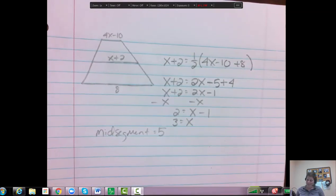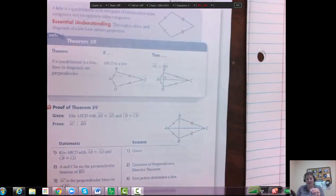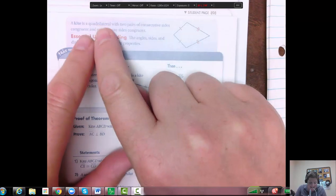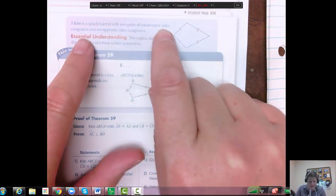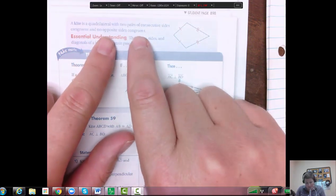The next theorem and last one is, what is a kite? Last shape that we need to go over. So a kite is a quadrilateral, two pairs of congruent sides, congruent with no opposite sides congruent.